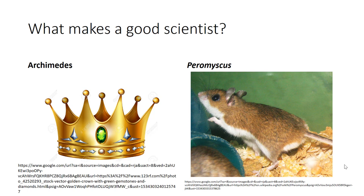Two illustrations of this: Archimedes was tasked by the king to determine if a crown was pure gold. He noticed that the crown displaced water, developed the idea of determining density, and went running out saying 'Eureka, I found it.' The other illustration is Peromyscus white-footed mice — an incredibly observant person made a chance observation on the beach and was able to predict that this mouse species had adapted to beach living.